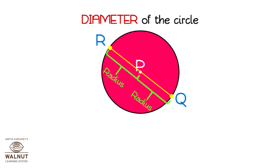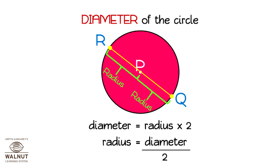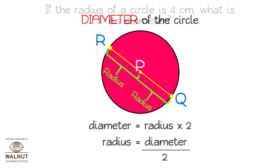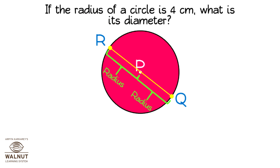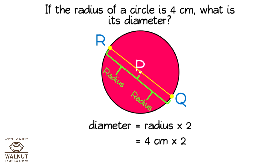Diameter is equal to 2 times the radius; radius is equal to diameter divided by 2. If the radius of a circle is 4 centimeters, what is the diameter? Diameter is always double the radius, so diameter is equal to radius times 2. It is 4 cm times 2, which is 8 cm. The diameter is 8 centimeters.